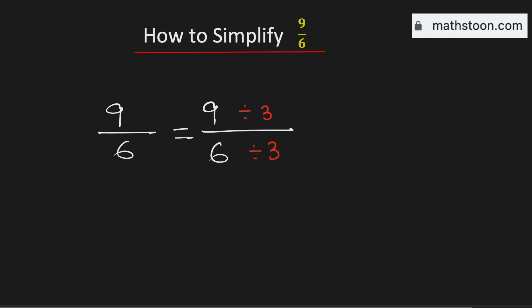And by doing so we will get 3 in the numerator and 2 in the denominator. Now look that this fraction cannot be simplified further because both the numerator and the denominator are prime numbers.